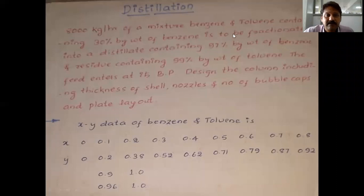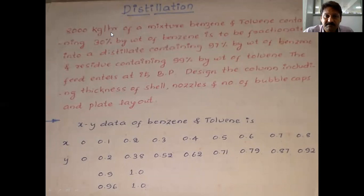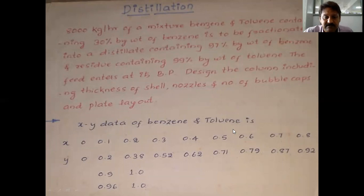In a distillation column problem, always think about the feed. If it is given in kg per hour and in weight percent, try to convert that into moles per hour or kilomoles per hour — that is a very important aspect in distillation design. Regarding VLE xy data: if it is given in the problem, use it; otherwise refer to page 18-3 in Perry's Handbook where you will find xy data as well as temperature-composition data.